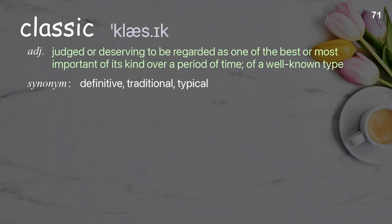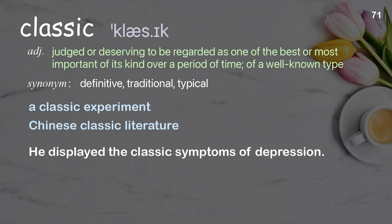Classic: Judged or deserving to be regarded as one of the best or most important of its kind over a period of time; of a well-known type. Examples: A classic experiment. Chinese classic literature. He displayed the classic symptoms of depression.